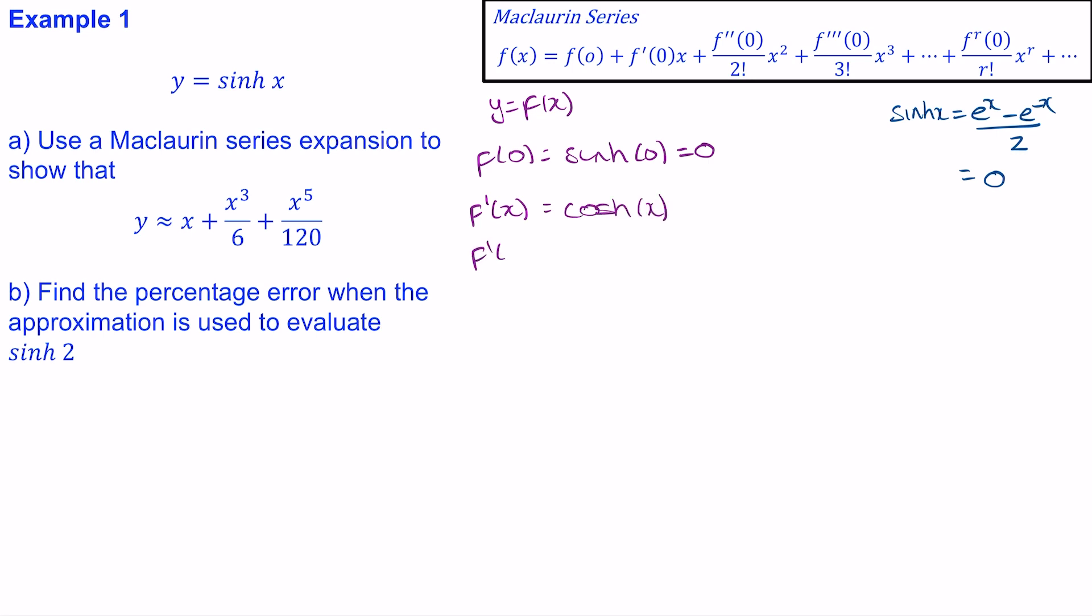So to work out f'(0) we substitute 0 into cosh(x), and we know that cosh(x) is e^x plus e^(-x) over 2. When you substitute 0 in here you get 1 add 1 which is 2, divide that by 2 and we get 1. So f'(0) is 1.